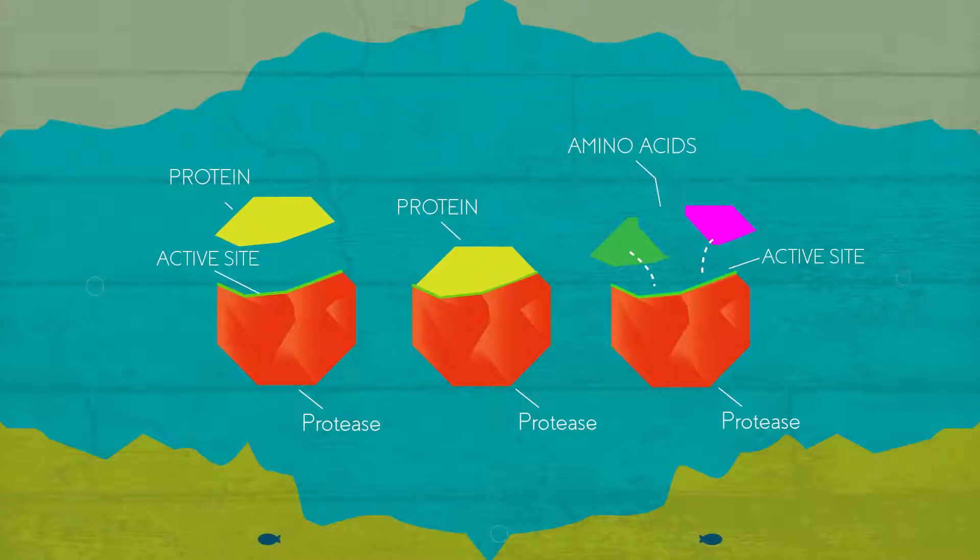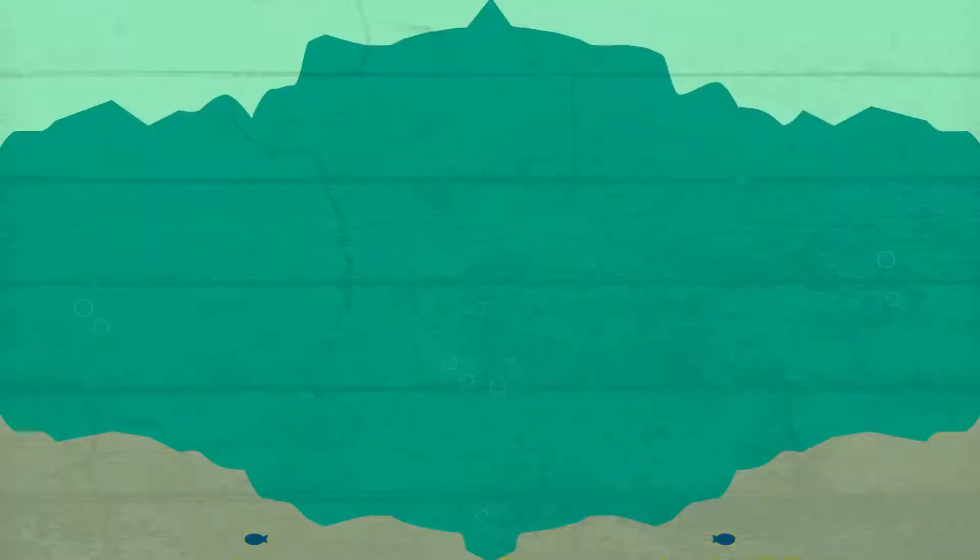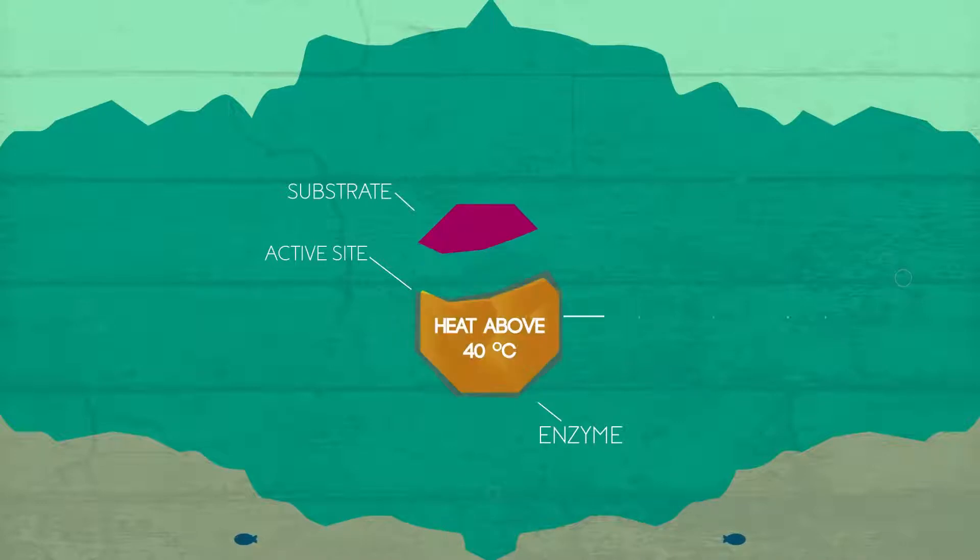If we look in more detail, denaturation of enzymes and any other protein means that the shape of the enzyme has changed in some way, usually a permanent change. The activity of an enzyme depends heavily on its shape, particularly of the active site which binds the substrate or substrates.